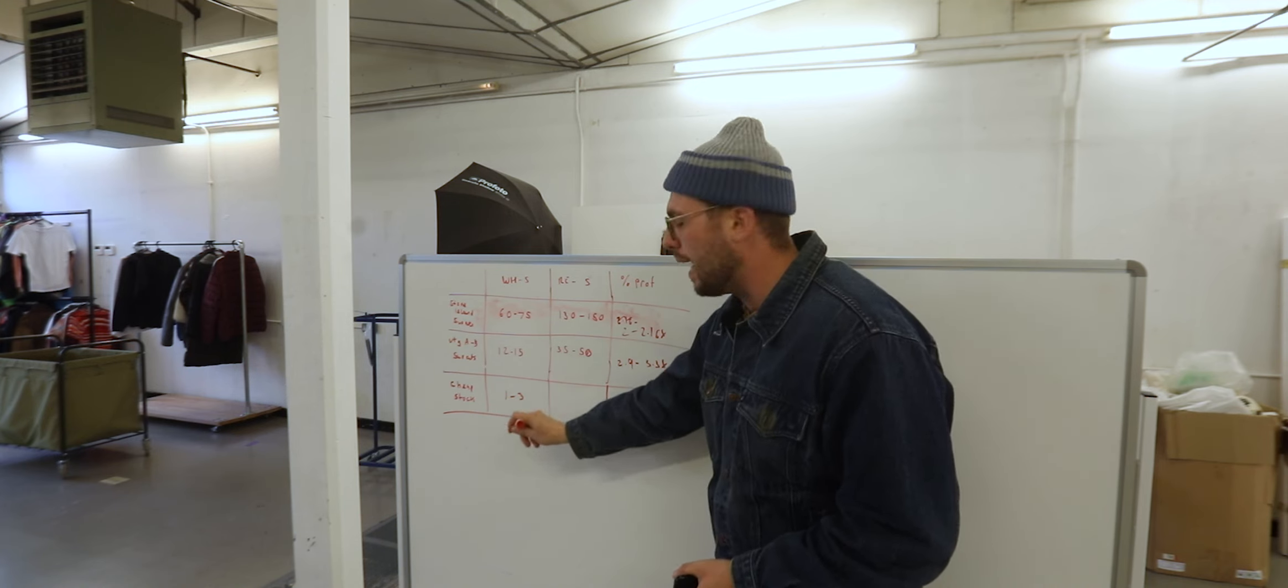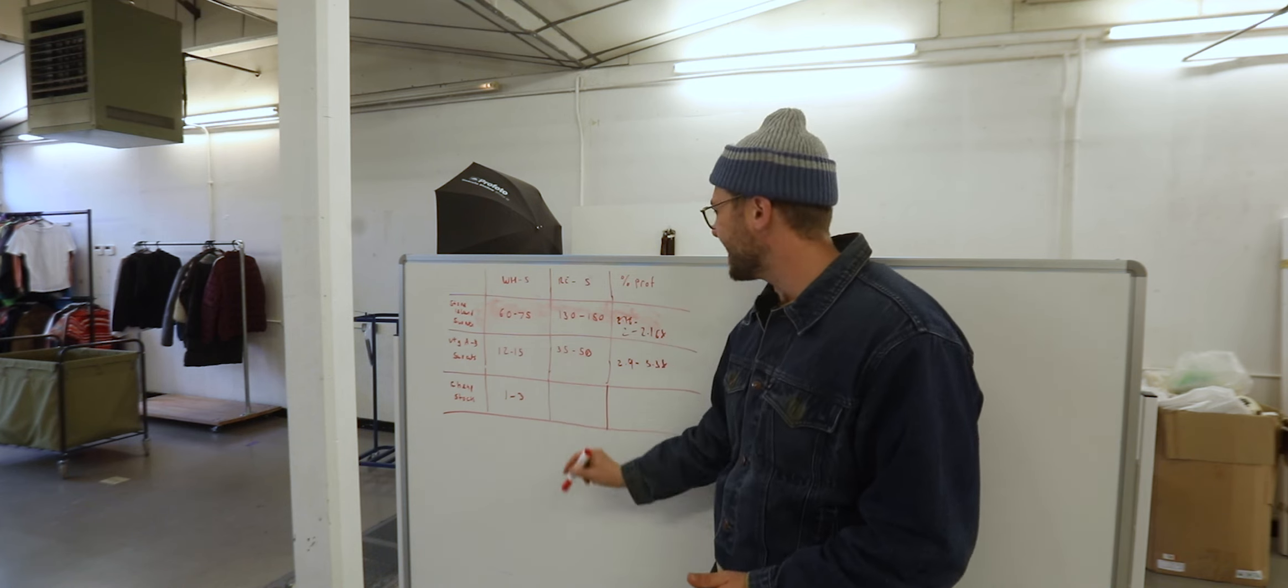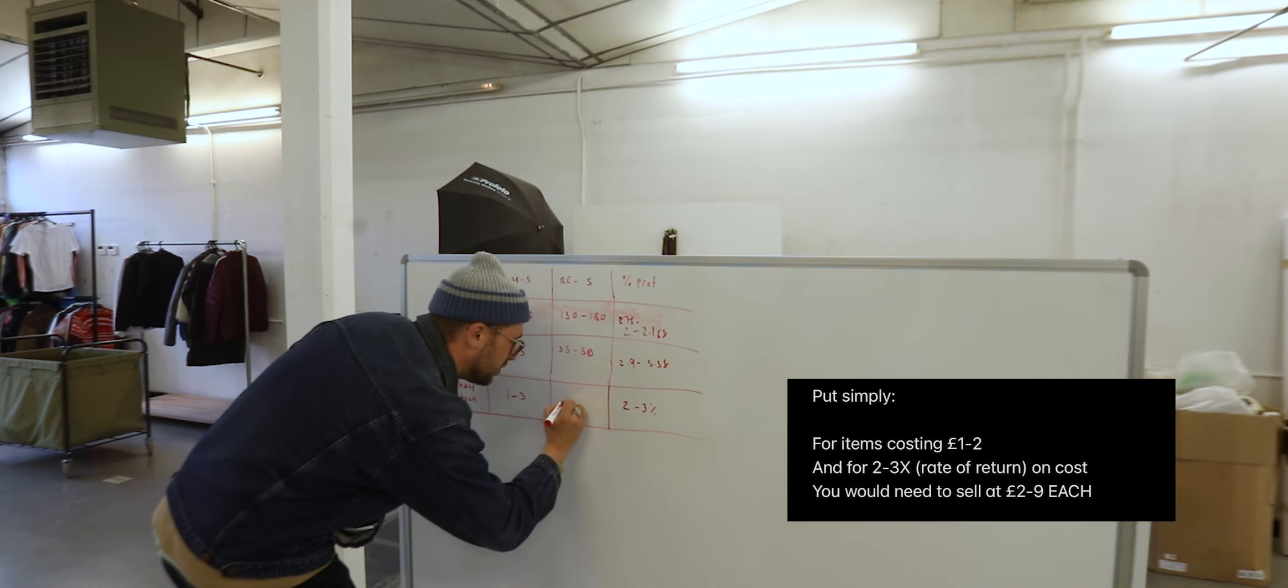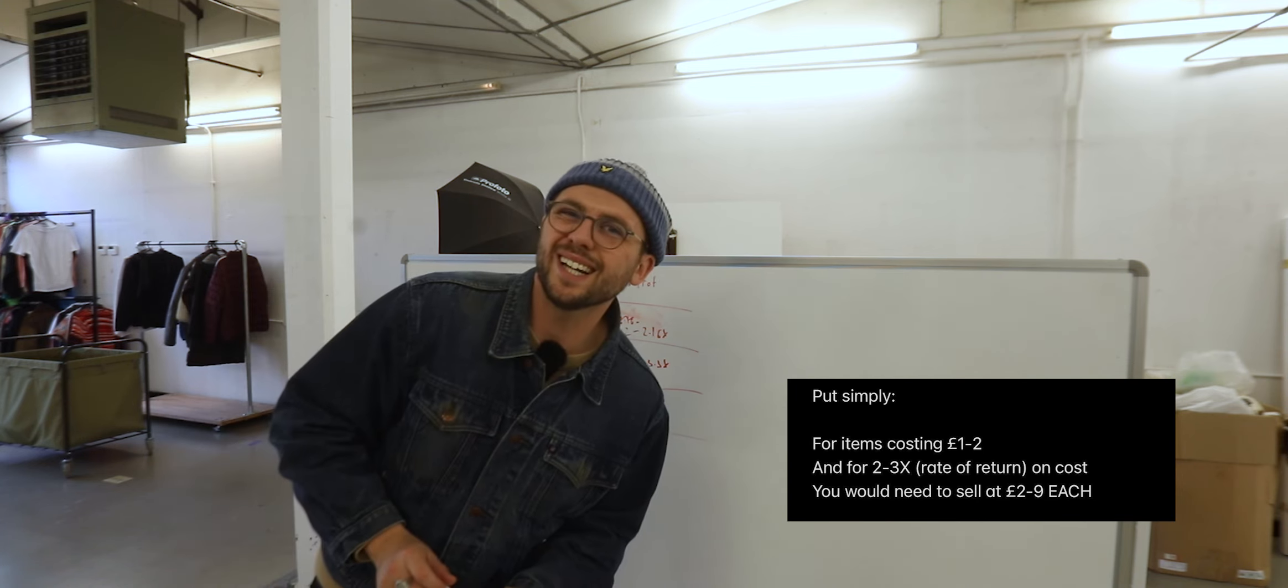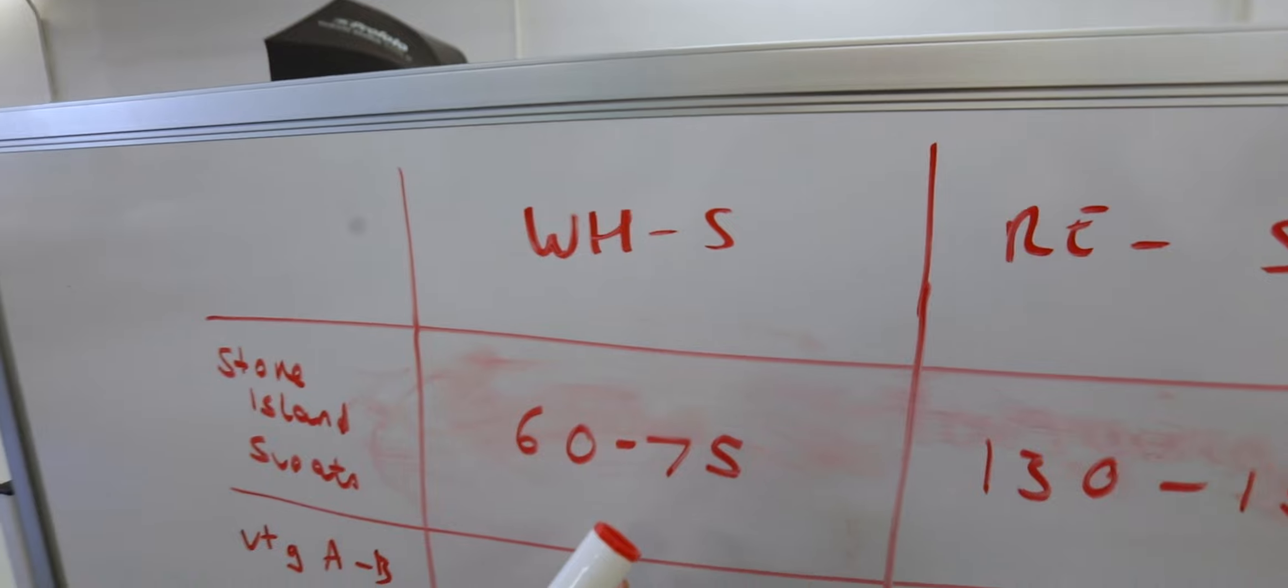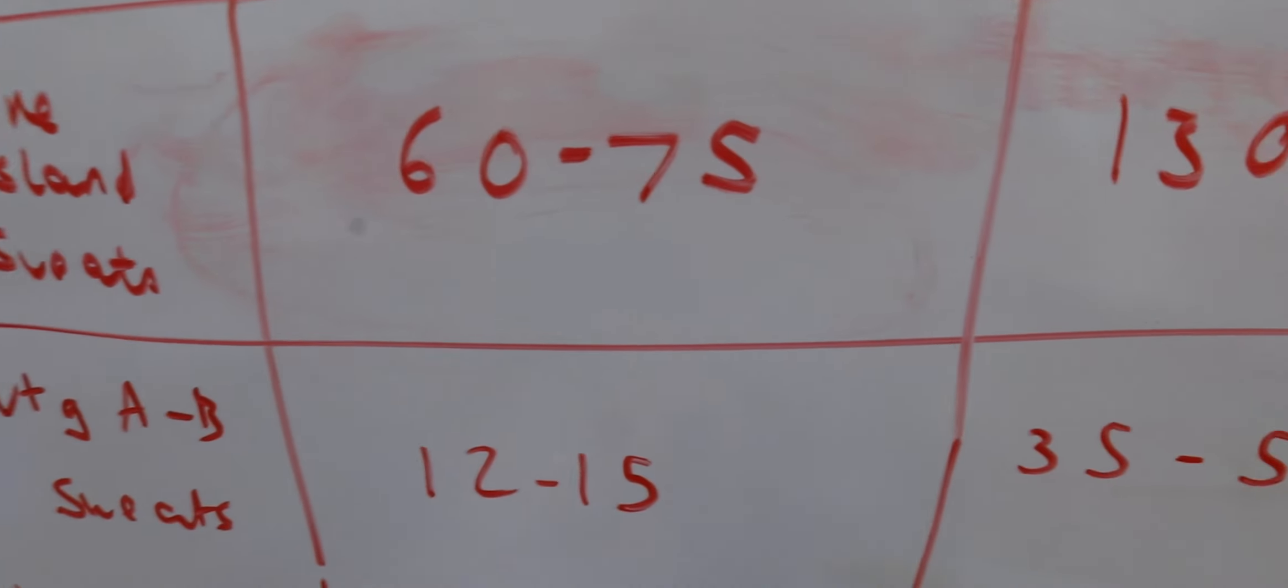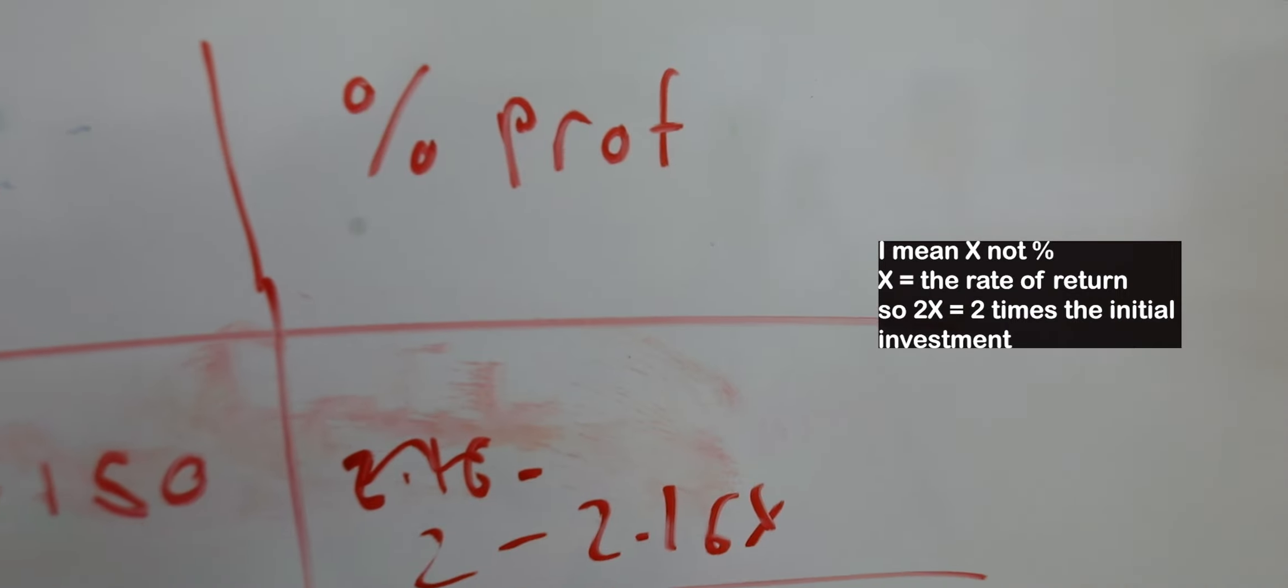If we want a 2% to 3% profit margin based on the same thing for this, then we would have to sell the items at £2 to £9. Stone Island, £60 to £75 wholesale value. Resell at 130 to 150. 2% to 2.16% profit. We go to vintage A to B sweatshirts at £12 to £15, 35 to 50 at the resale value and 2.9% to 3.3% on the profit.